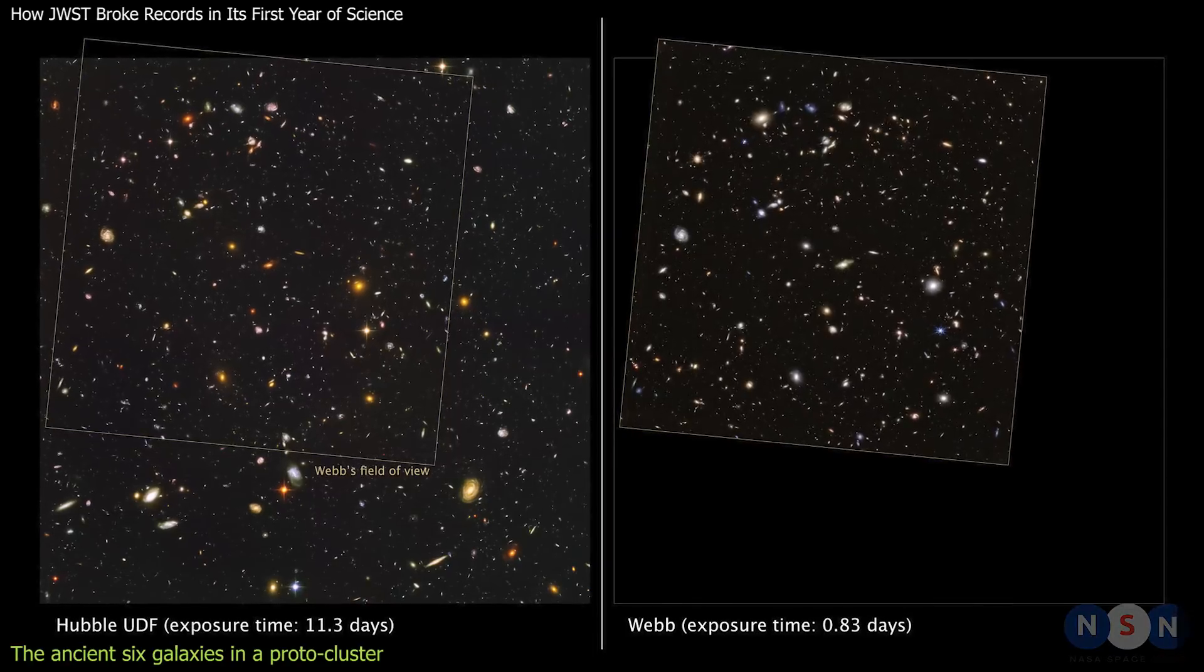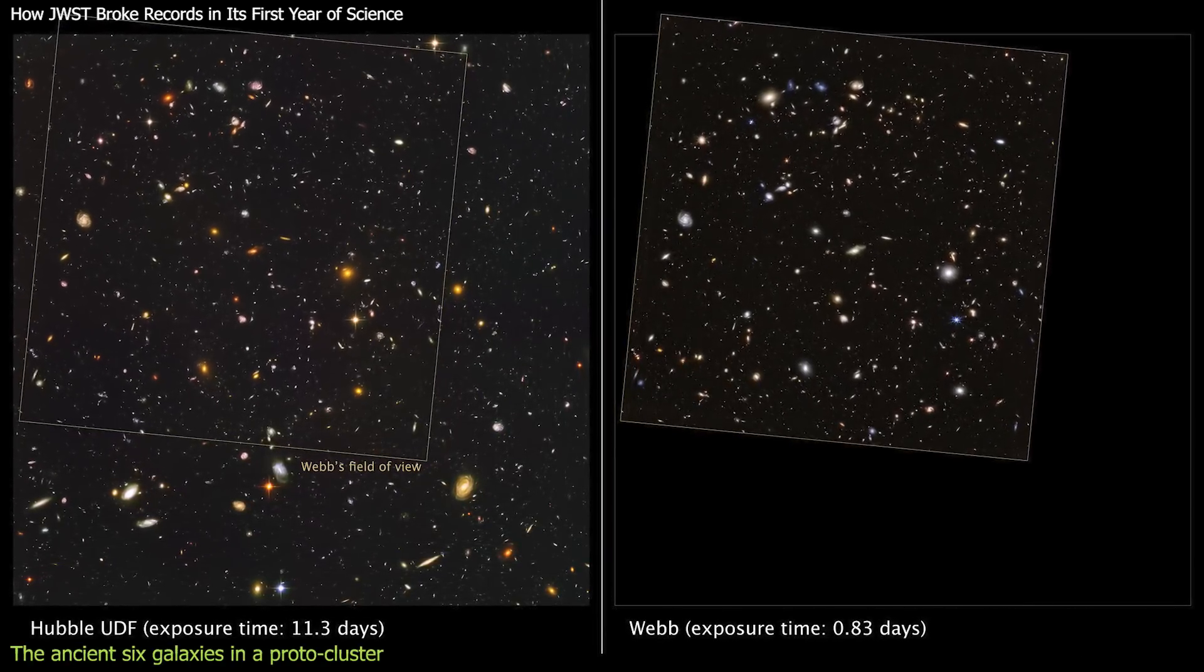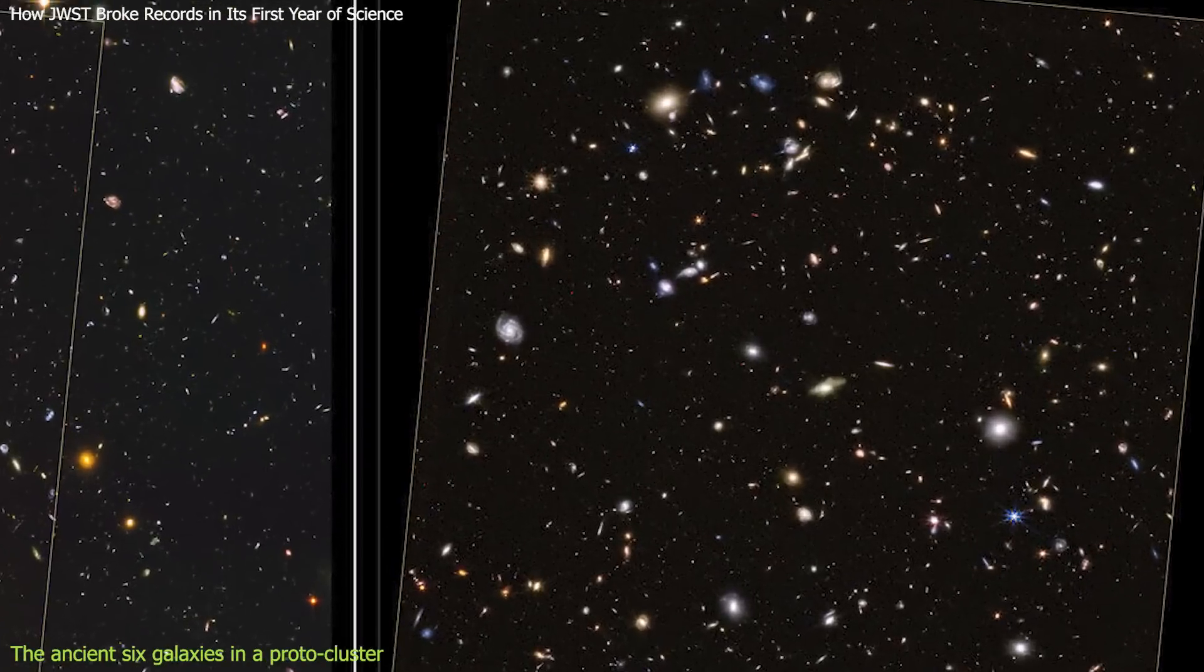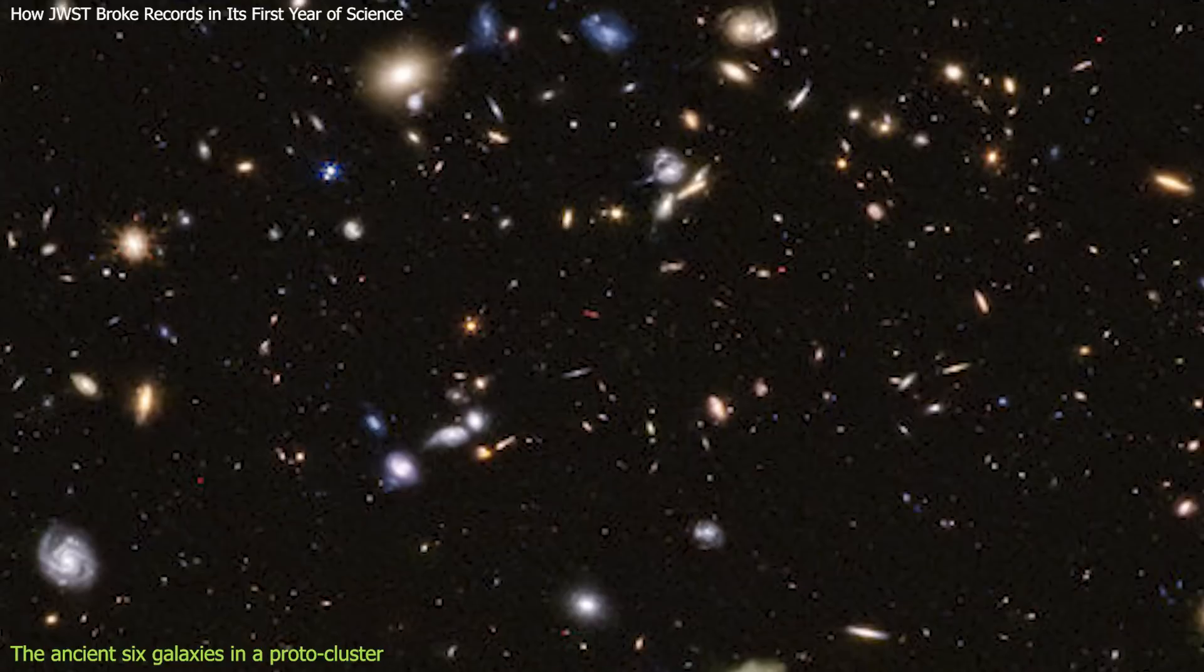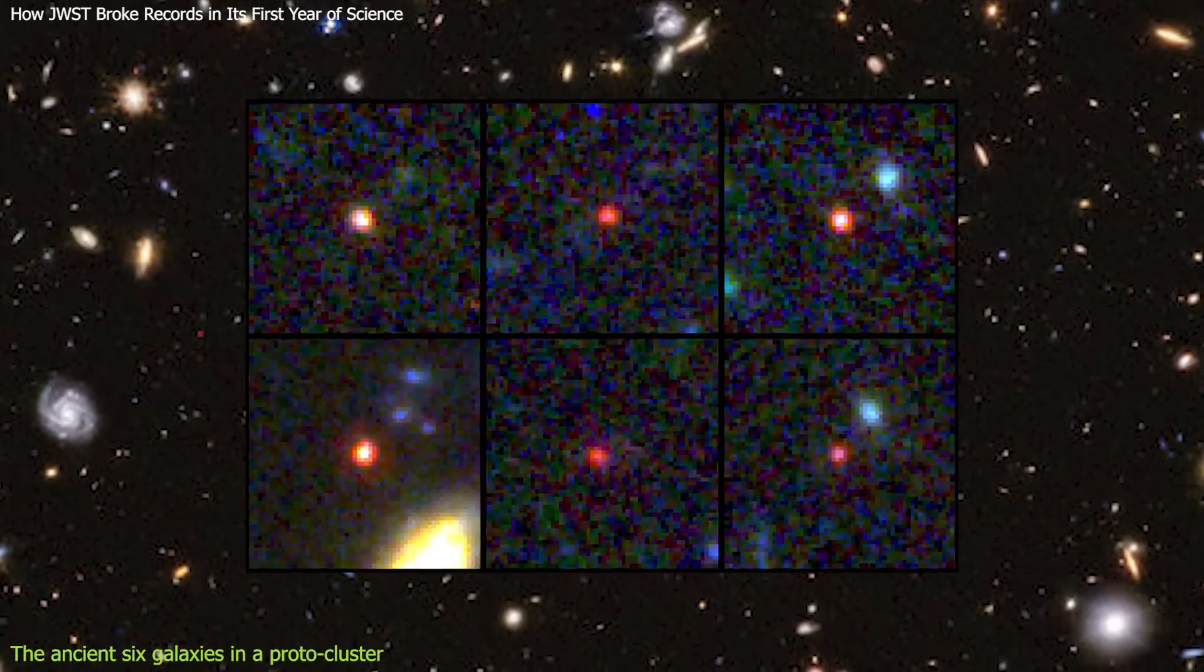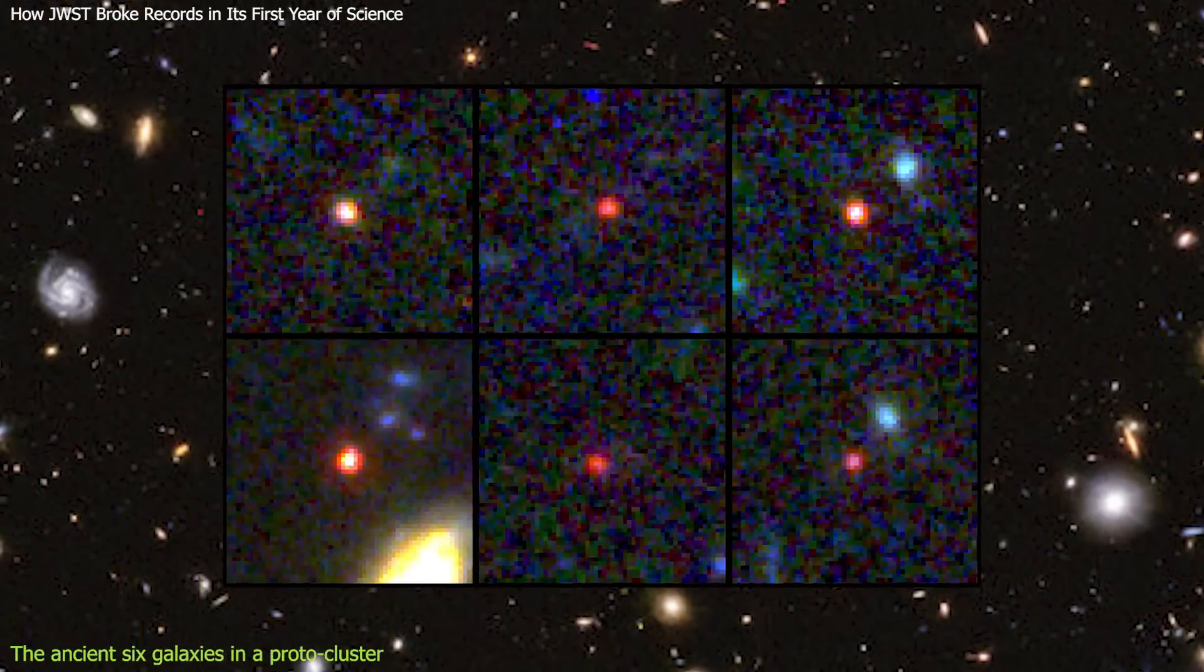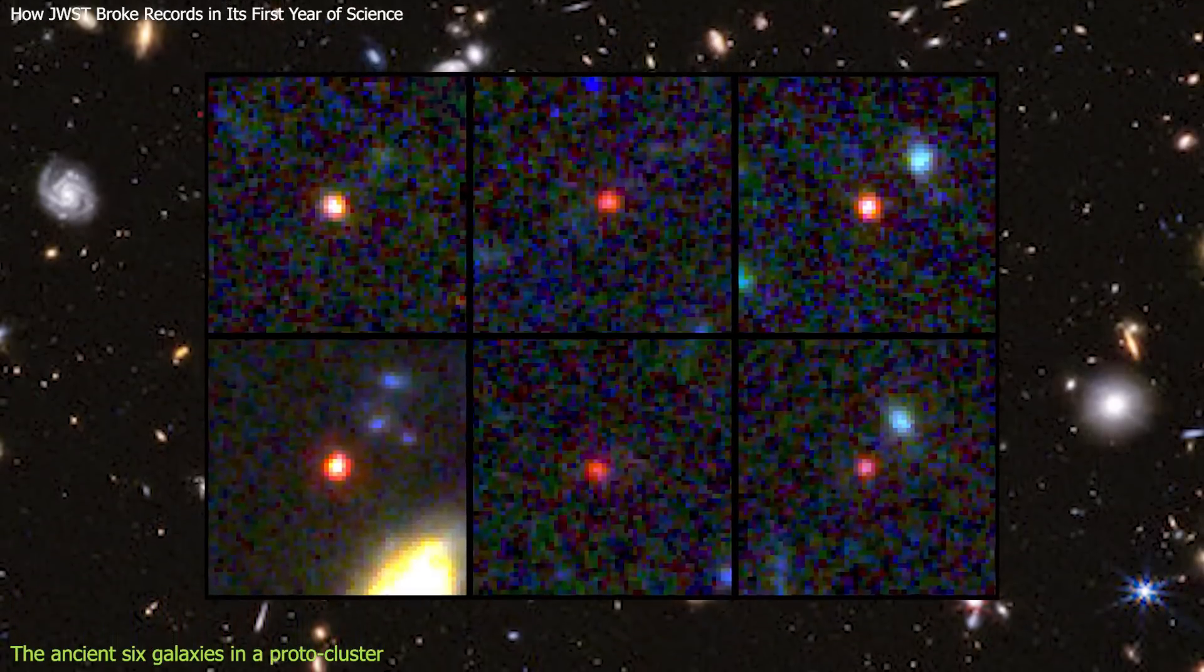The astronomers used JWST's Near Infrared Camera, NIRCam, and Near Infrared Spectrograph, NIRSpec, to observe these galaxies and measure their distance and properties. They found that these galaxies are very massive, with masses ranging from 200 billion to 1.5 trillion times that of our Sun. They are also very bright, with luminosities up to 100 times that of our Milky Way galaxy. They are forming stars at a rate of up to 1,000 solar masses per year, which is very high compared to other galaxies at that time.